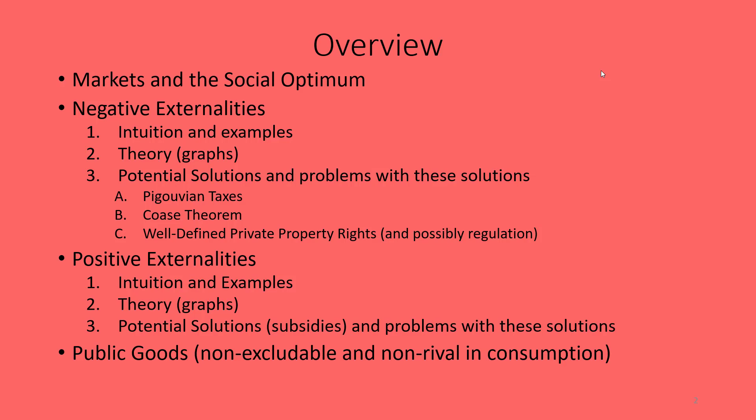From there, we'll talk about positive externalities, going through the same ideas: intuition and examples, the theory with graphs and math, and potential solutions, which in this case would involve subsidies, along with the problems with those solutions. Then we'll get into public goods, which are goods that are non-excludable and non-rivalrous in consumption. We'll carefully define those compared to other types of goods, discuss the problems they pose for the market, and look at some potential solutions.